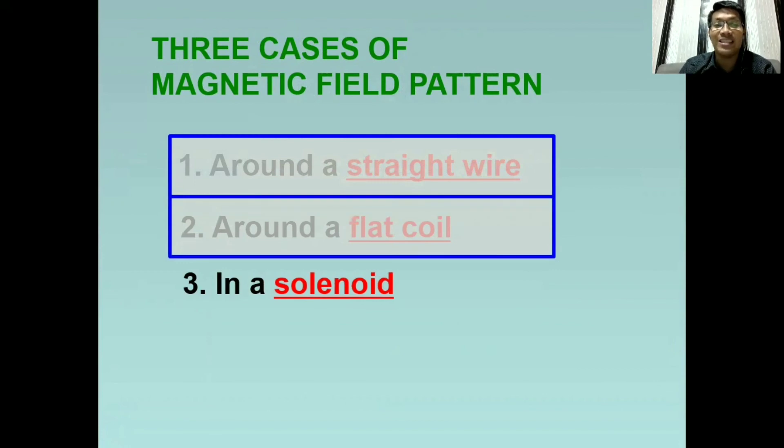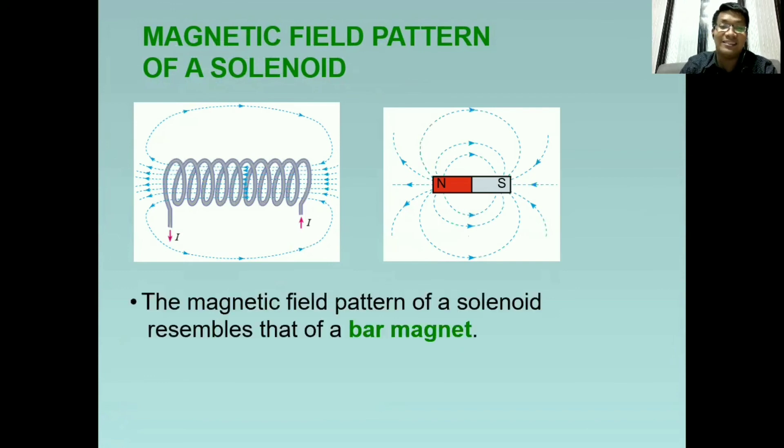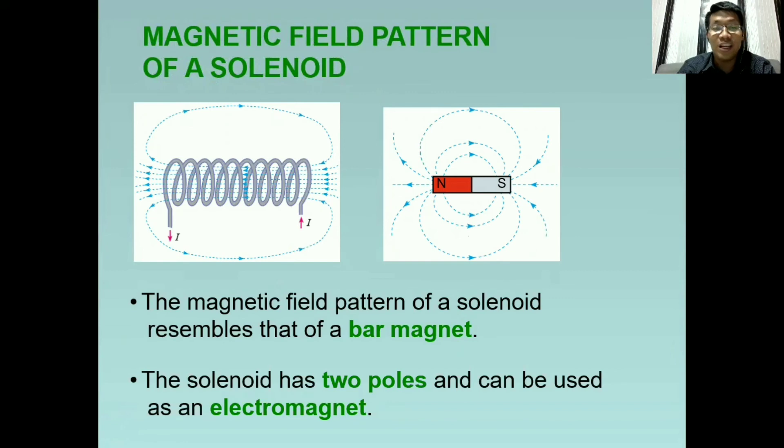So let's proceed to the last case for magnetic field pattern in a solenoid. And this is how a solenoid looks like. So it's like a wire with a lot of coils. And its magnetic field pattern is alike with a bar magnet. The solenoid has two poles. So you have to remember that. Just like the bar magnet, it has south and north poles. And it can be used as an electromagnet.